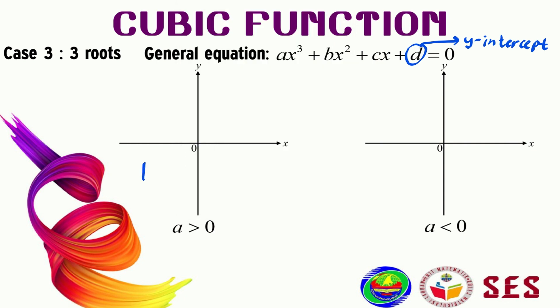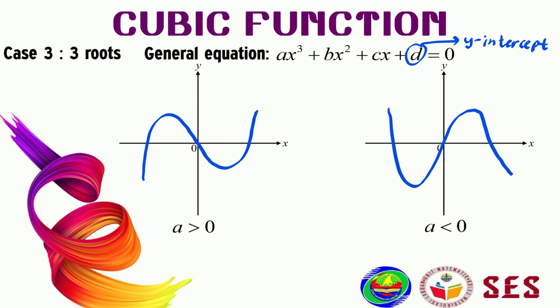When 'a' is positive, the shape of the graph looks like this. To make it easy to memorize: when 'a' is positive, the shape of the graph starts from sad to smile. Let us write here: from sad to smile.